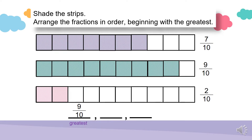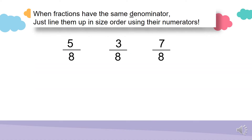Let's look at the fraction strip again and find out which fraction is the next biggest. 7 over 10 comes next after 9 over 10, and the smallest fraction is 2 over 10. Look closely at the fractions arranged from greatest to smallest: the one with the bigger numerator is the greatest, and the one with the smallest numerator is the smallest fraction. This only applies when the denominator is the same. When fractions have the same denominator, we just line them up in size order using the numerators.